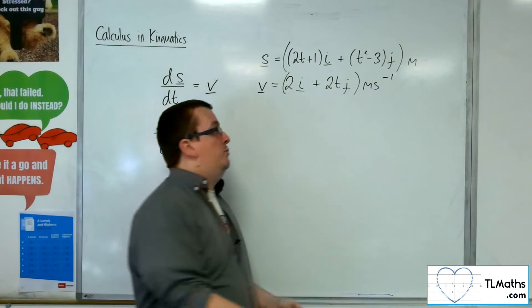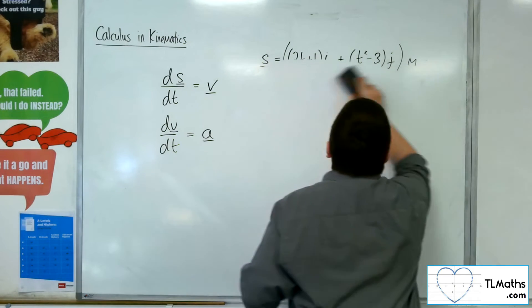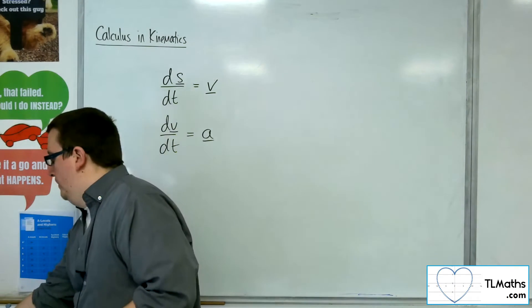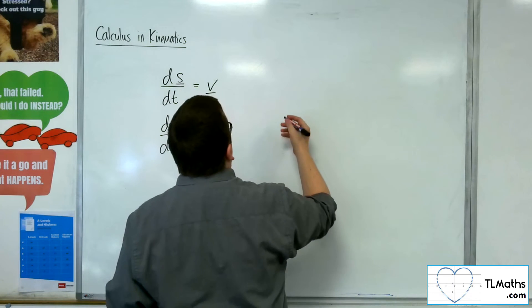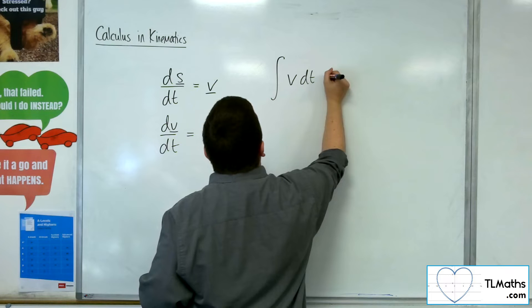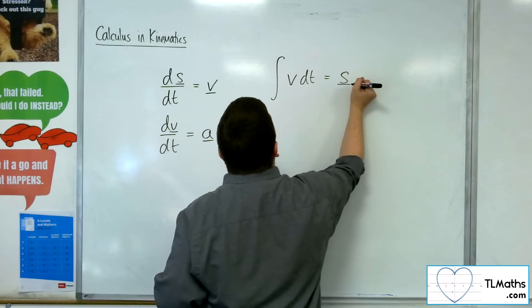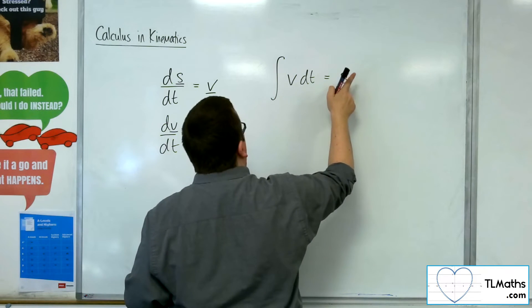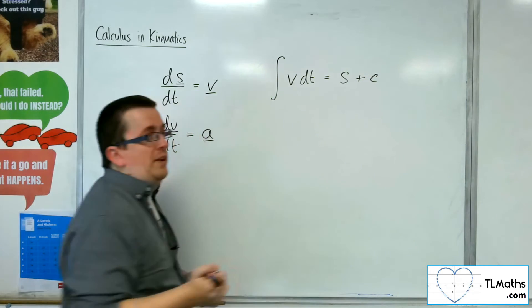Now, in order to reverse the process, we're going to integrate, of course. So we're going to have that the integral of v dt is equal to the displacement, plus some constant c.